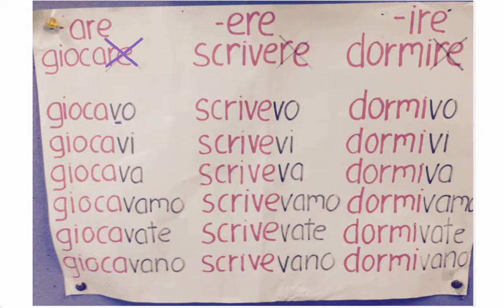And we're adding VO for IO, VI, VA, VAMO, VATE, VANO for LORO. But the pronunciation is a bit different, so: GIOCAVO, GIOCAVI, GIOCAVA. The NOI form — this is one that people mostly mispronounce — GIOCAVAMO. Then GIOCAVATE, GIOCAVANO.